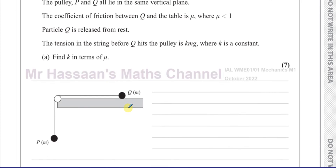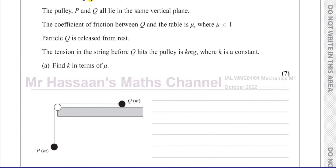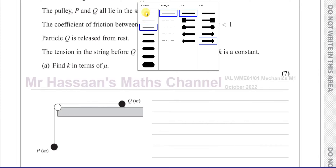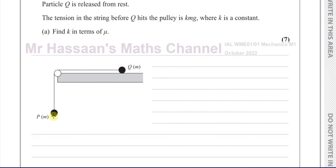Let's put some information into this diagram. We have the weights of P and Q acting vertically downwards — that's Mg and Mg for each particle. Q is in contact with the surface of the table, so there's a normal reaction force acting vertically upwards, which is R, and in this case R equals Mg.